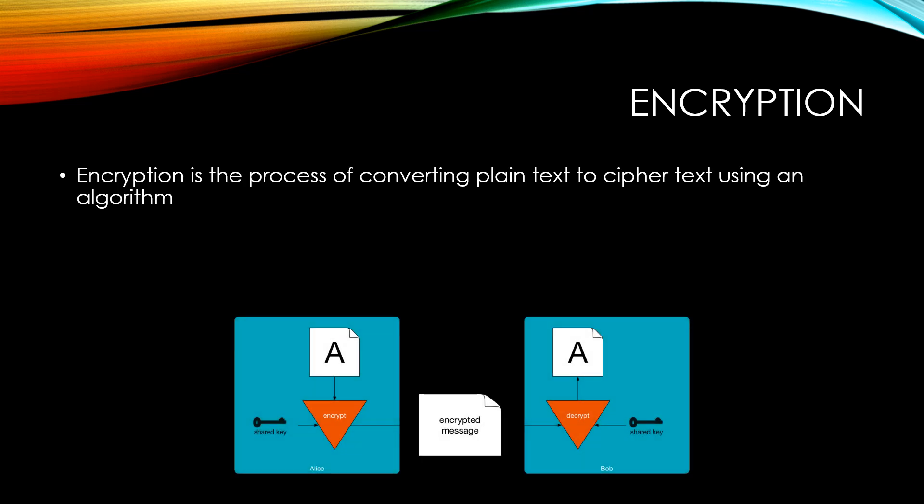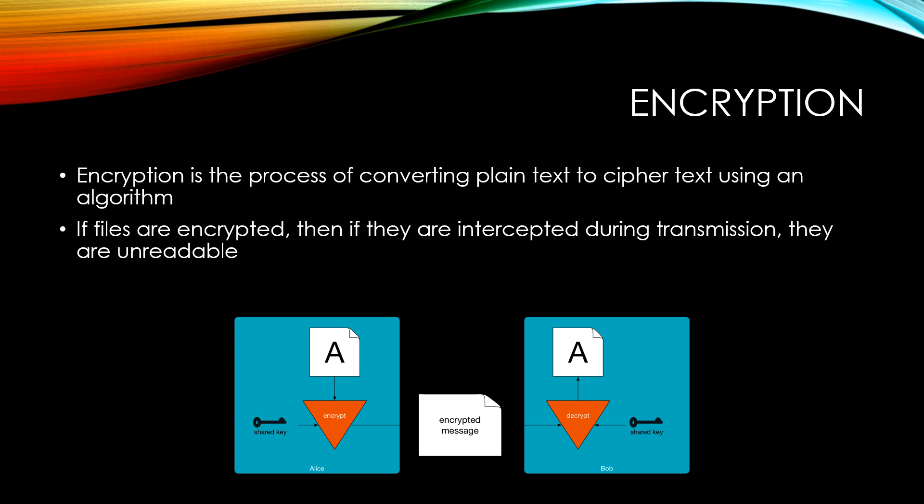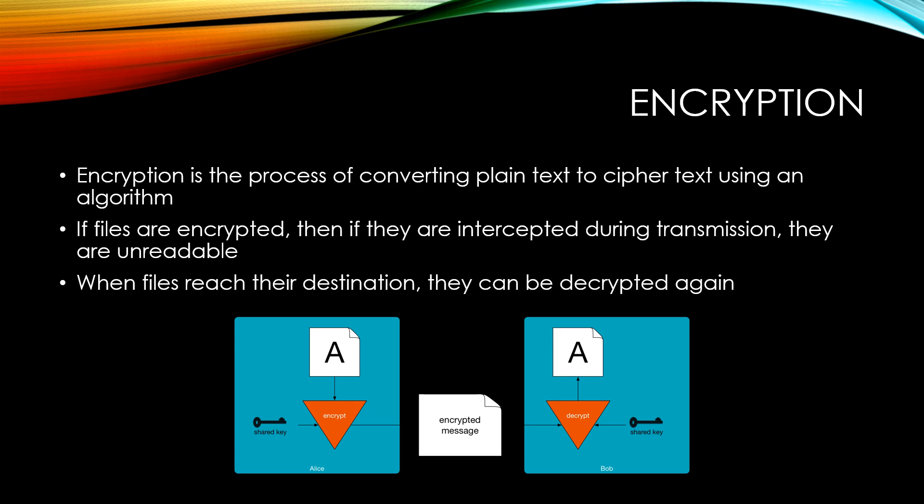Encryption is the process of converting plain text to cipher text that is encoded so it can't be understood, using an algorithm. If files are encrypted then if they are intercepted during transmission they are unreadable to the person that intercepts them. When files reach their destination they can be decrypted again so that they can be used as expected.